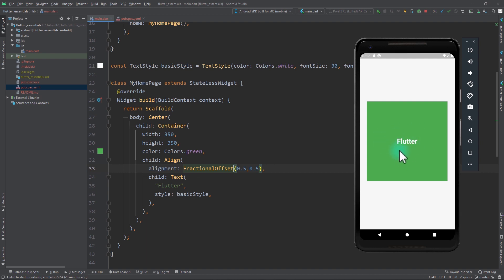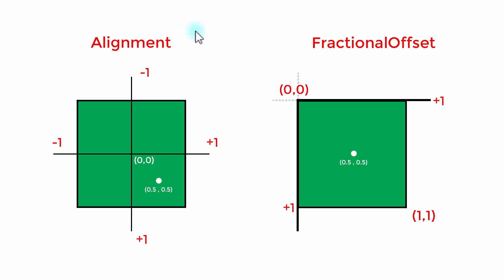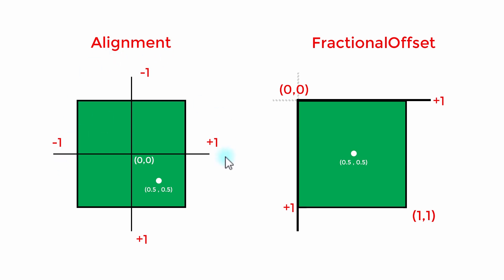Now what is the difference between FractionalOffset and Alignment? Let me show you a detailed graphic. In this graphic, we have the difference between Alignment and FractionalOffset. The green box is the container we had in the app. When you pass in 0.5 and 0.5 to FractionalOffset, the value lies in the center of the container because the values 0.0 and 1.0 represent the top left and bottom right corners respectively. While in the case of Alignment, when you pass in the value of 0.5, the point lies between the center and the bottom right of the container. In simple terms, the value of Alignment ranges between -1 and 1, whereas FractionalOffset ranges between 0 and 1.